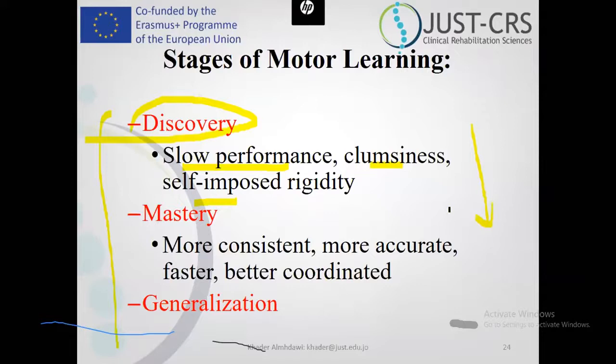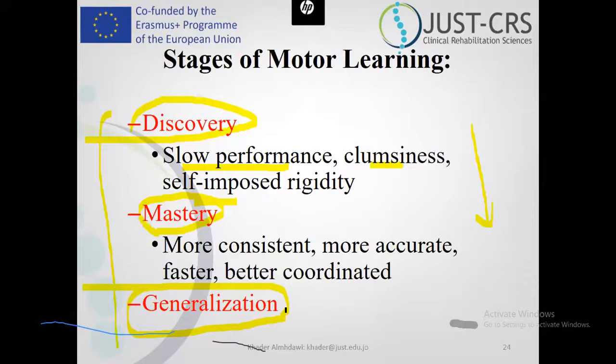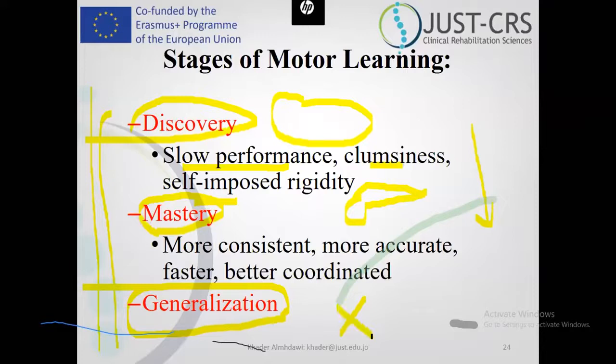You can play one or two songs in a specific context — this is mastery in the same context. When you are an experienced player, you can play on different pianos, with kids, even in different contexts. So you need to walk your patient through discovery, mastery, and generalization through intensive practice on self-care, leisure, and work activities. You need to give a lot of feedback at the discovery stage, a little feedback at the mastery stage, and try to give no feedback at the generalization stage so the patient can do the activity in different contexts and with different tools.